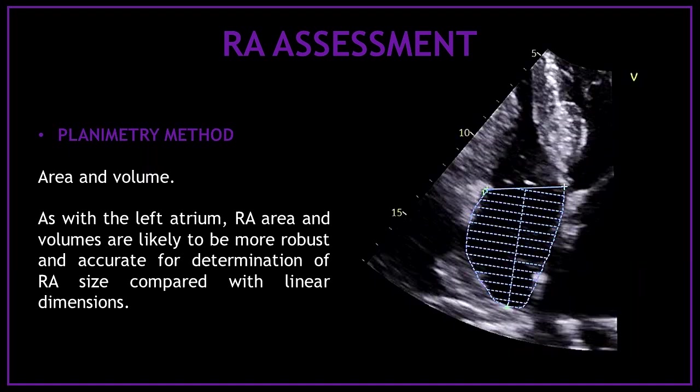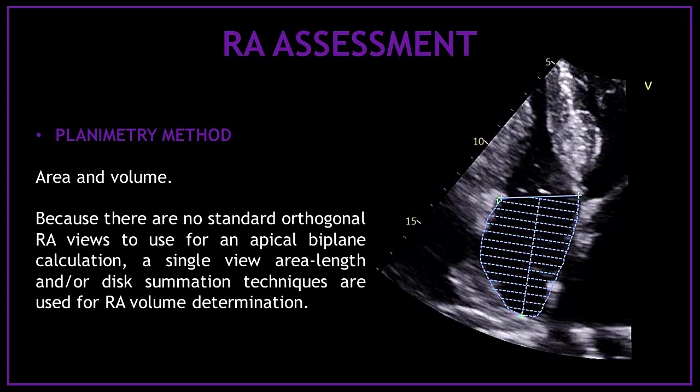We can also use a planimetry method to obtain the area and volume of the right atrium. As with the left atrium, the right atrial area and volumes are likely to be more robust and accurate for determination of right atrial size compared with linear dimensions. Because there are no standard orthogonal right atrial views for an apical biplane calculation, a single view area-length and/or disk summation techniques are used for right atrial volume determination.